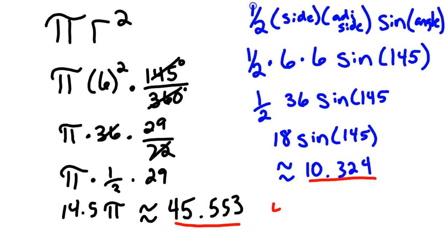And so the area of the red section is found by just subtracting the big area minus the small area. So 45.553 minus 10.324 is going to give us an approximate area, and that's why I have the little tildes, an approximate area of 35.23.